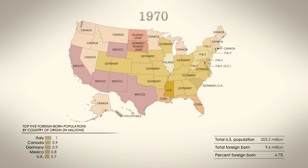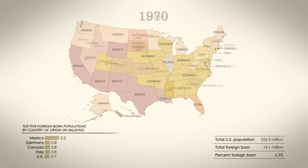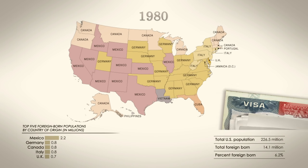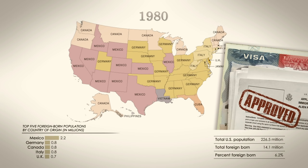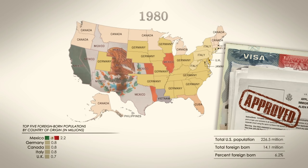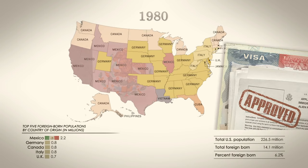By 1970, the percentage of foreign-born reached an all-time low. Italy was the only nation that had sent more than a million people. In 1980, after Congress began granting more visas to people from the Western Hemisphere, the number of states where Mexico was the top country of origin doubled in a decade, becoming the dominant foreign-born population in the entire country.